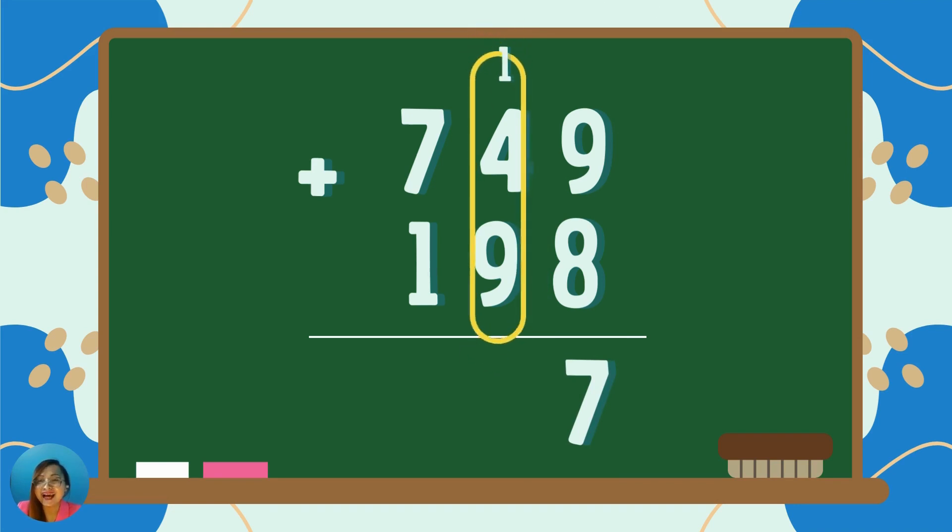Next, add the tenth digits, including the regroup digits. In this case, the digits in the tenth place are 4, 9, and 1. So, 4 plus 9 plus 1 is equal to...